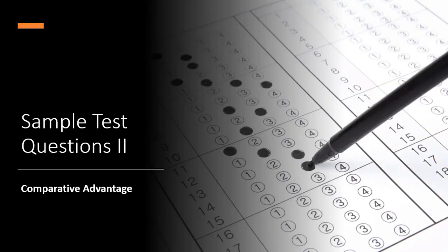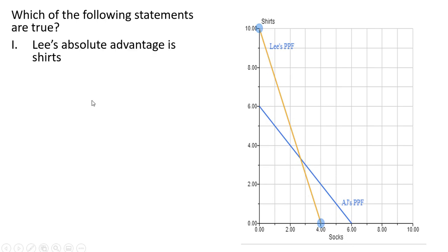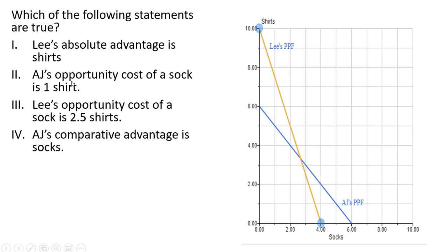Hello. In this video, we're going to look at some more sample test questions dealing with comparative advantage. We're going to do some graphical questions. Here we have the production possibilities frontier for Lee and for AJ. AJ's is in blue, Lee's is in yellow. We're going to look at the following statements.